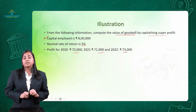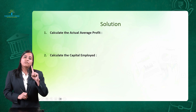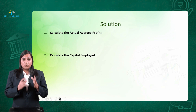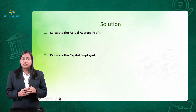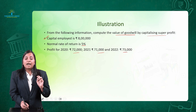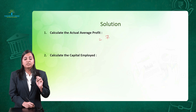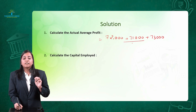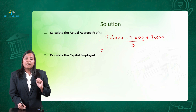Step number 1: calculation of actual average profit, given by total profit divided by number of years. We have 3 years of profit: 72,000, 71,000, and 73,000. Taking the total of all three and dividing by 3 — the number of years — the average profit comes out to rupees 72,000.